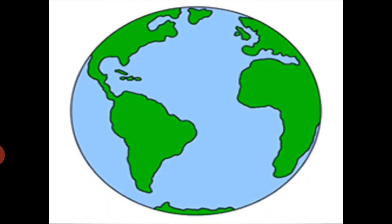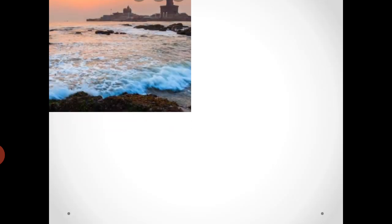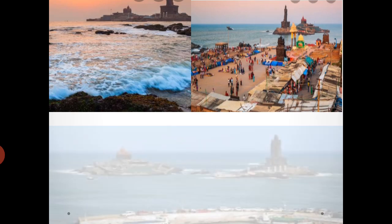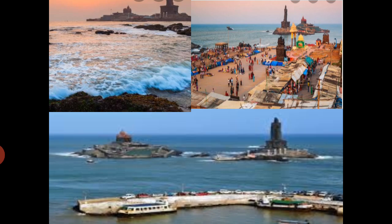Where is Kanyakumari situated? Here is a picture of the earth. Kanyakumari is a town located in the Tamil Nadu state of India. It is the southernmost tip of India and the Indian subcontinent, and is surrounded by three seas on three sides.